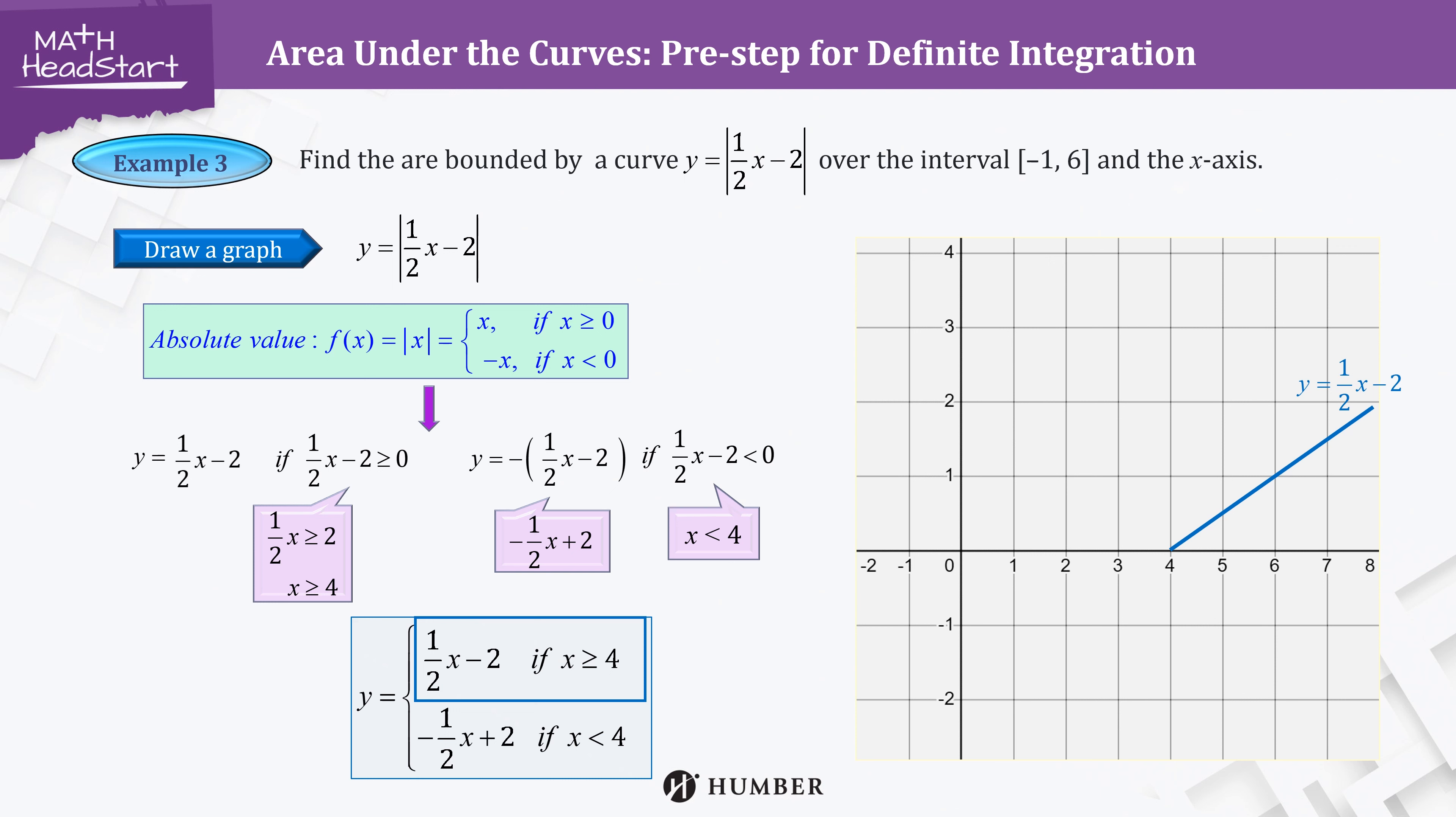Likewise, for the other part of the function, plot the y-intercept as 2 and plot another point by making use of the slope, -1/2. Then connect the two points to draw a graph. Again, this graph should be less than 4 for the domain, so this is the correct line.